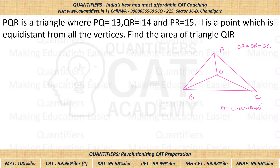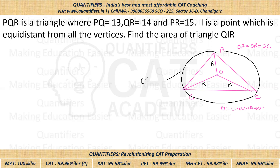If we take O as the center and OA, OB, OC as the radius (since all of them are equal), and draw a circle, this circle is known as the circumcircle. The radius, denoted by capital R, is known as the circumradius.